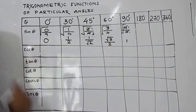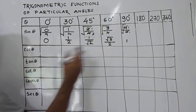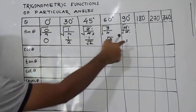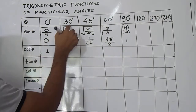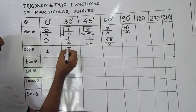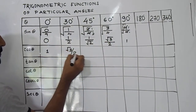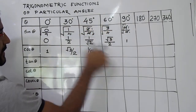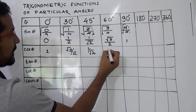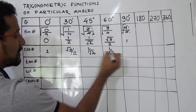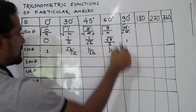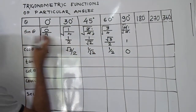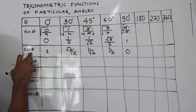Now what will be the cosine values? Just write the sine values in reverse order. So cos 0° = 1, cos 30° = √3/2, cos 45° = 1/√2, cos 60° = 1/2, and cos 90° = 0.